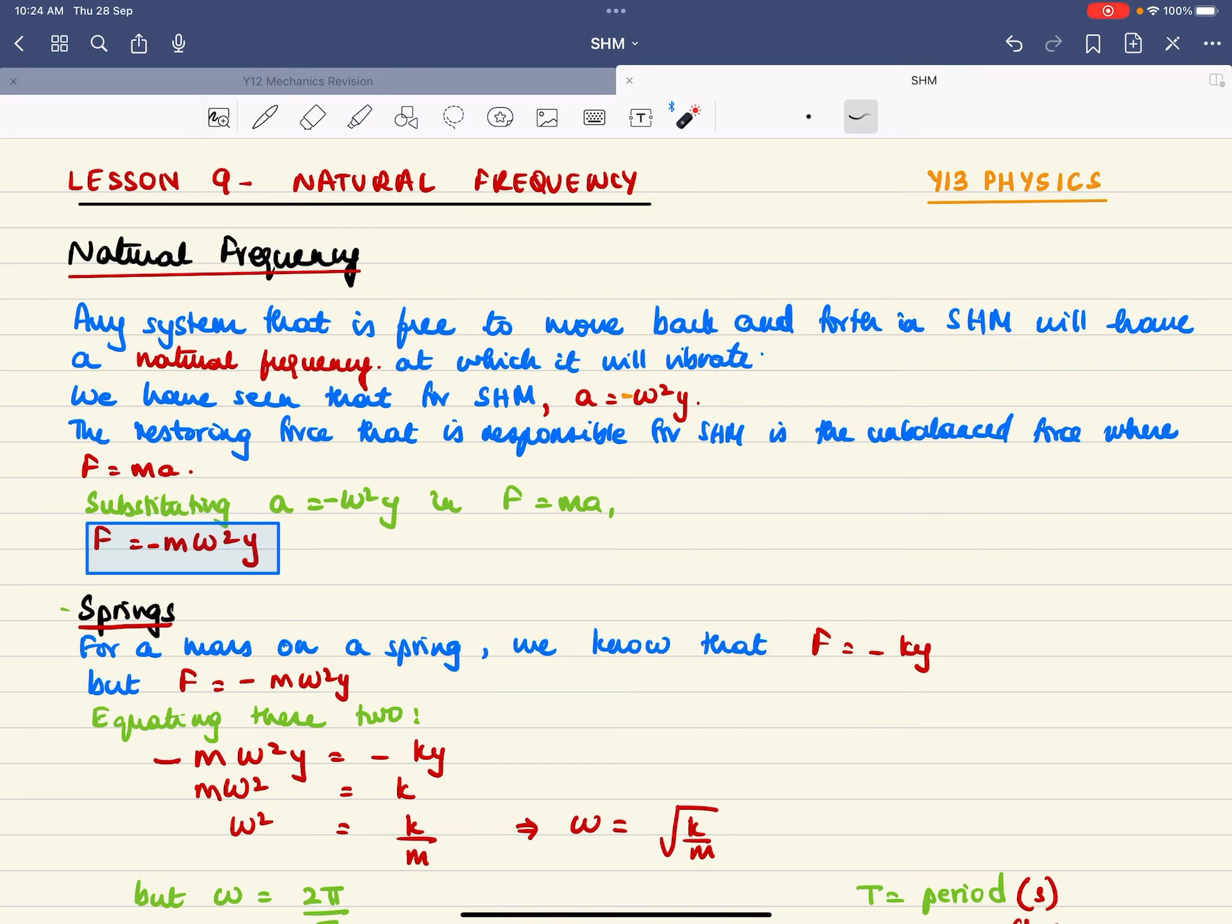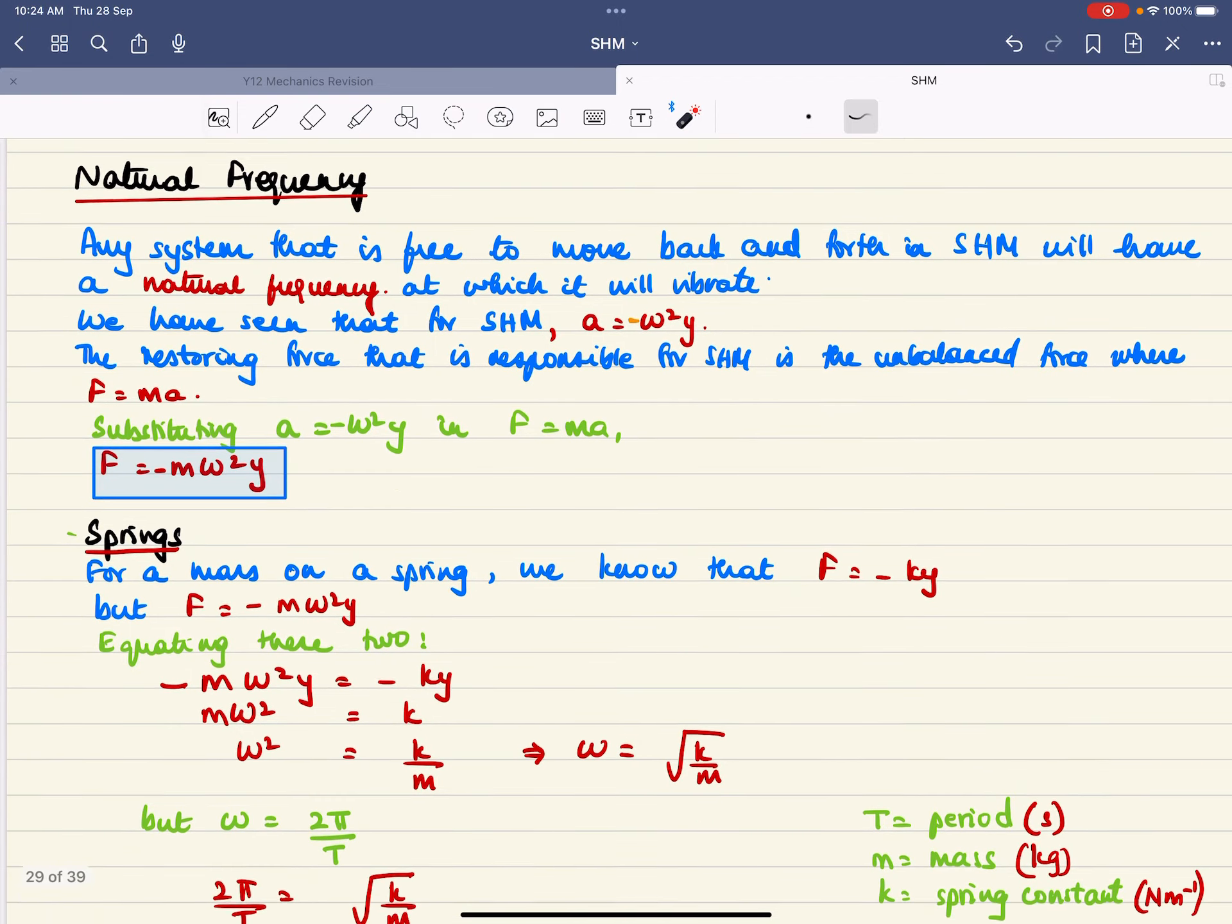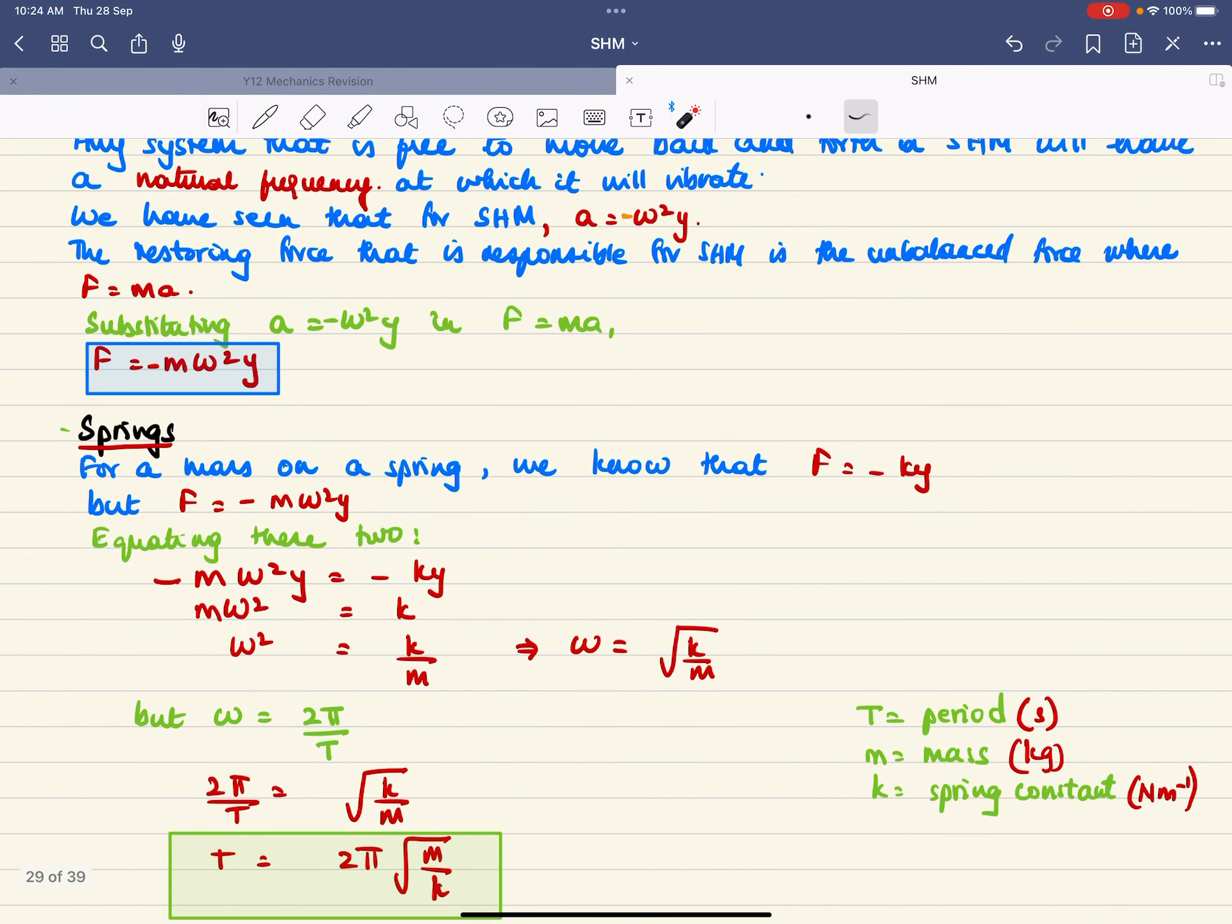For this equation, if you substitute for acceleration with this one, you get f is, in place of a, you get m omega squared y. Now let's look at the spring.